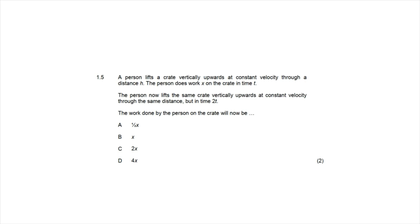Question 1.5: a person does work X on a crate in time t, then lifts the same crate through the same distance at constant velocity in time 2t. The work done is still X, because work equals force times displacement — there is no time variable. Doubling the time does not change the work done. However, if the question asked about power (work divided by time), then doubling the time would halve the power.